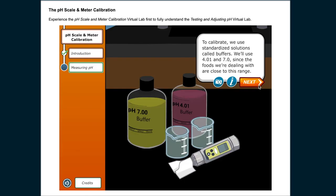To calibrate, we use standardized solutions called buffers. We'll use 4.01 and 7.0 since the foods we're dealing with are close to this range.